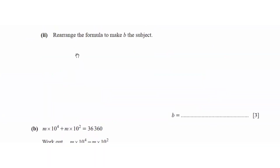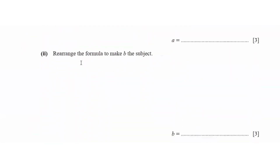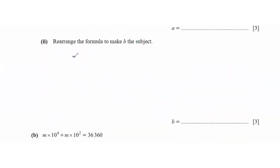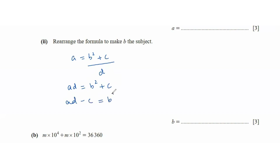Rearrange A equals B squared plus C over D to make B the subject. Multiply both sides by D: AD equals B squared plus C. Then AD minus C equals B squared. Square root both sides: B equals plus or minus the square root of (AD minus C).